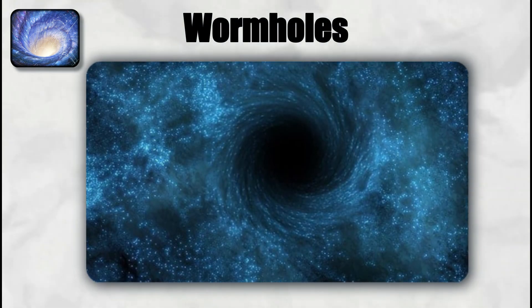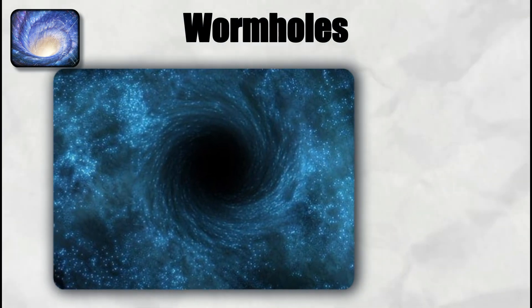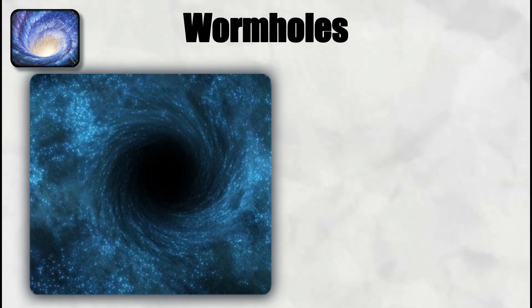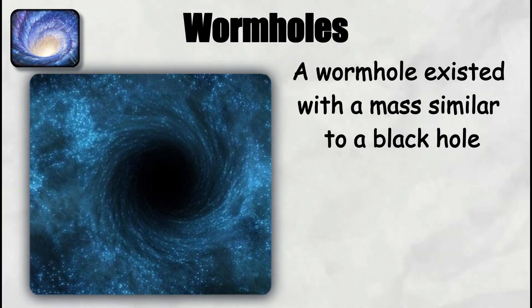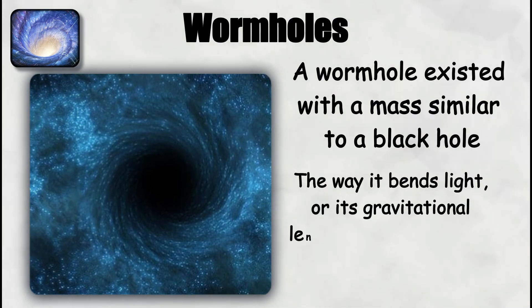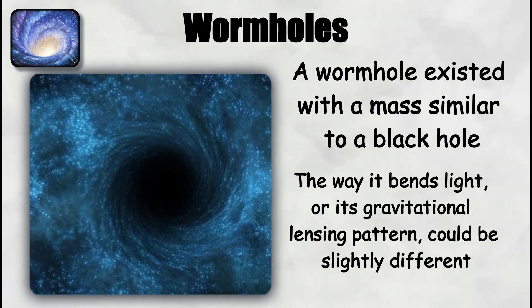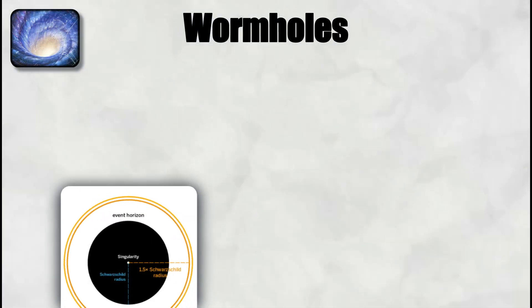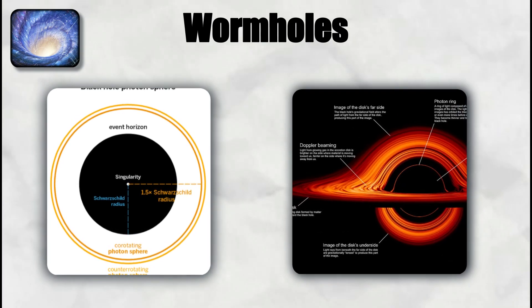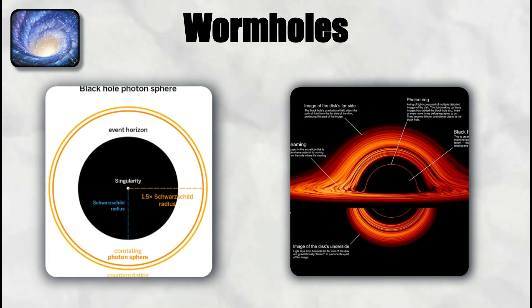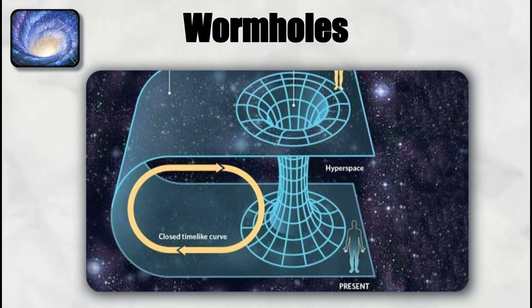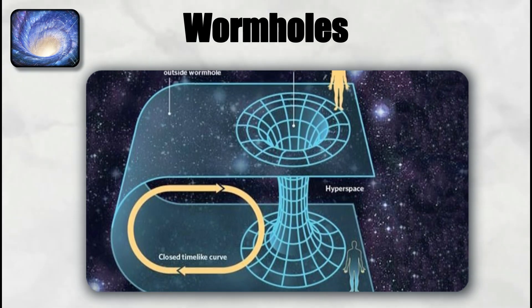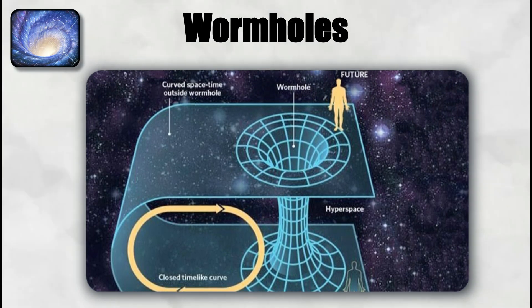Observational evidence for wormholes is absent. However, some proposals suggest that if a wormhole existed with a mass similar to a black hole, the way it bends light or its gravitational lensing pattern could be slightly different. For example, the photon sphere or accretion disk structure might display anomalies compared to a normal black hole. Upcoming very long baseline interferometry observations may eventually be sensitive enough to test such exotic signatures.